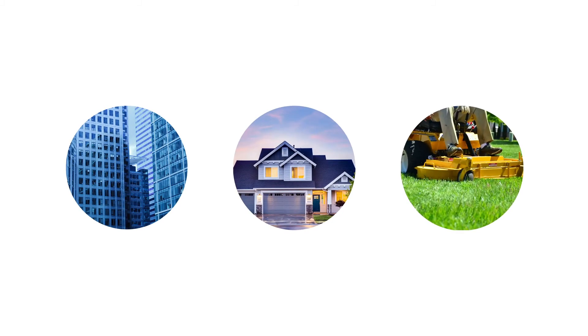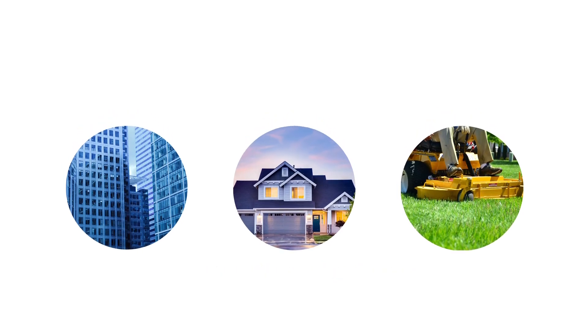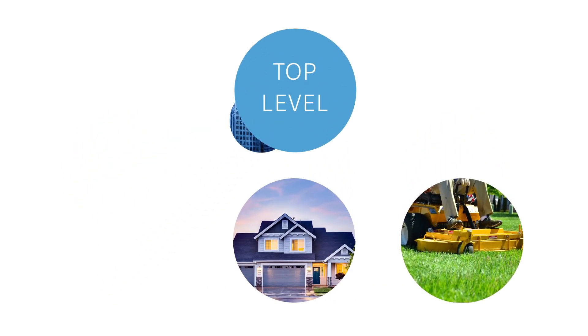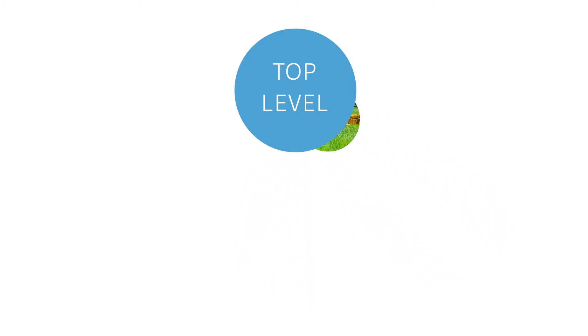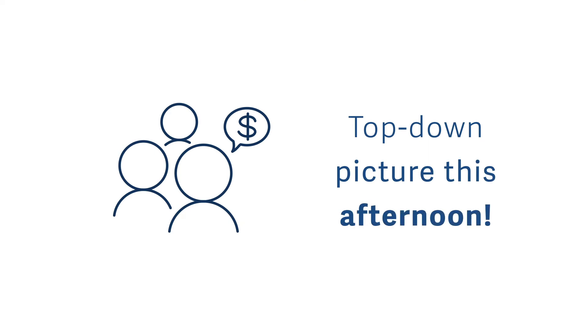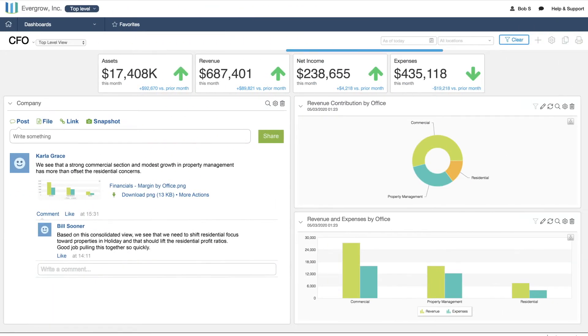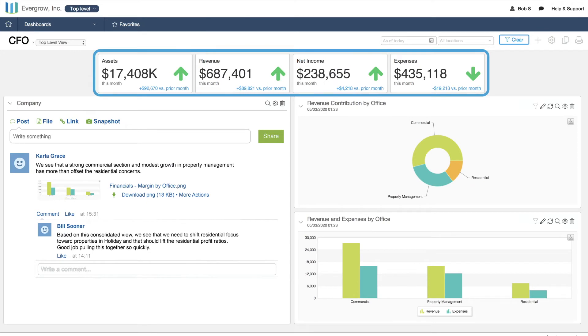Looking at these three different offices, we see that they have different focuses but a shared chart of accounts. Because Sage Intacct allows consolidations at any time, finance can simply consolidate and pull up information from across the organization — and the board wants the top-down picture this afternoon. If you work across borders in multiple currencies, it consolidates to a single base currency for consistent analysis. As you can see in this top-level view, overall we're doing well. We see instant metrics from across all the entities.